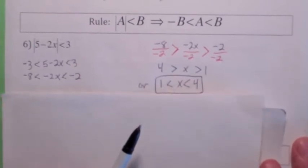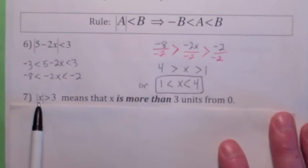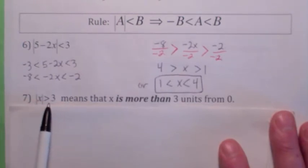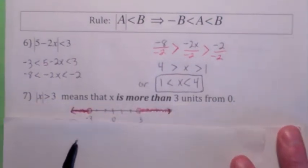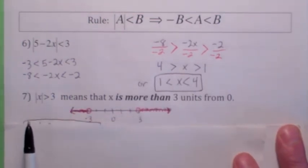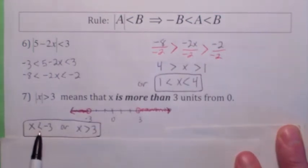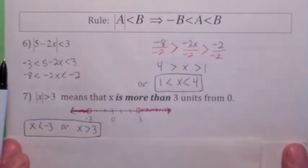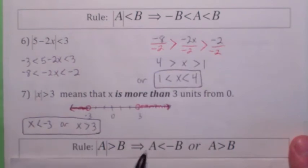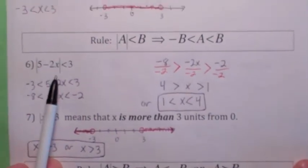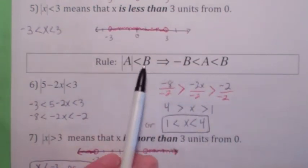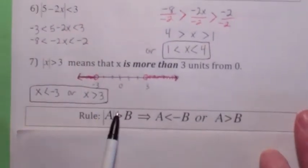The last thing I want to talk about is a little different situation. If you have the absolute value of a number is greater than 3, that's very different — you're saying that the distance that x is from 0 is more than 3 units. If you're more than 3 units away from 0, you don't know which side of 0. So you have to look at both cases. You could be more than 3 units away to the right, or more than 3 units away to the left. So the solution would be x is less than negative 3 or x is greater than 3. The rule is: when you have the absolute value of a greater than b, that means a is less than negative b or a is greater than b. Don't confuse that with the less-than rule. If it's less than, it means between. If it's greater than, you break it up into two cases.